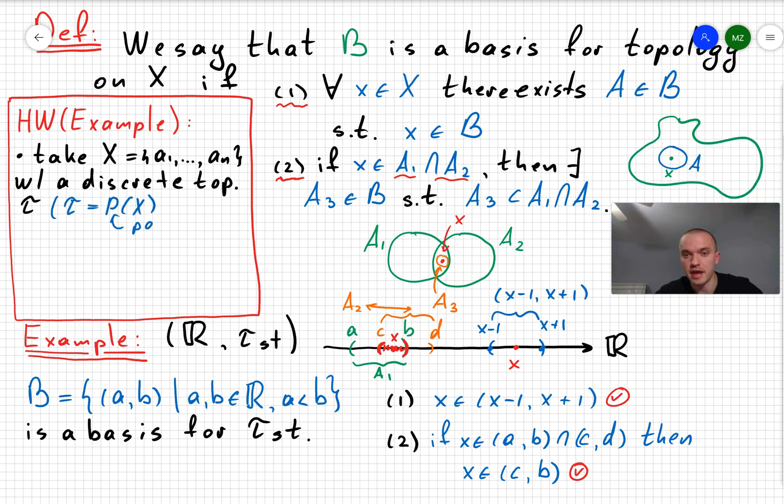Okay, example number two. Take any set X, any finite set X with elements a1 to an, and we're going to take a discrete topology. Discrete topology means that all open sets is going to be any subset of our set X. So in other words, topology is equal to the power set of X. Question: What is going to be a basis for the topology in this case?